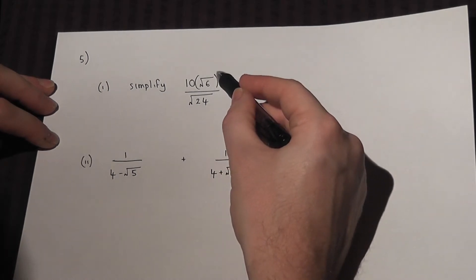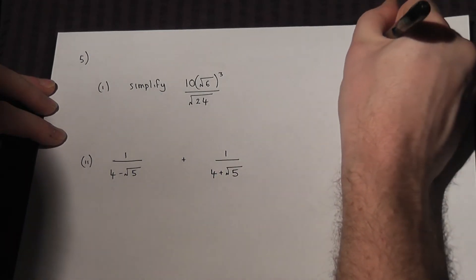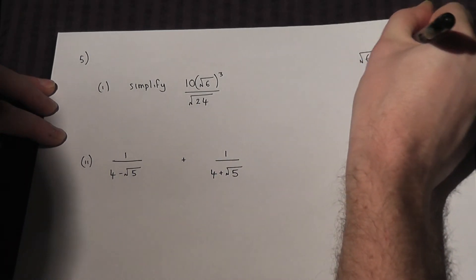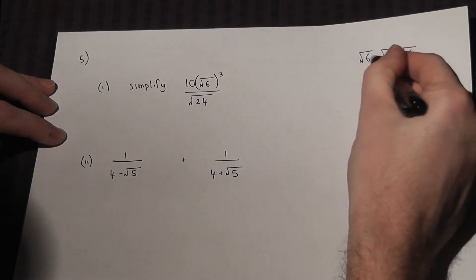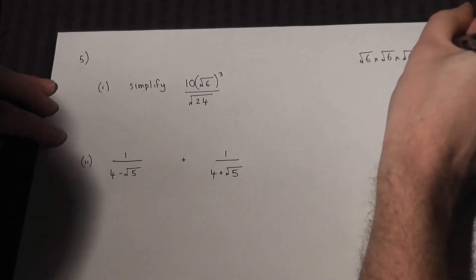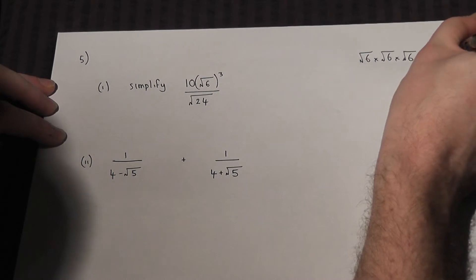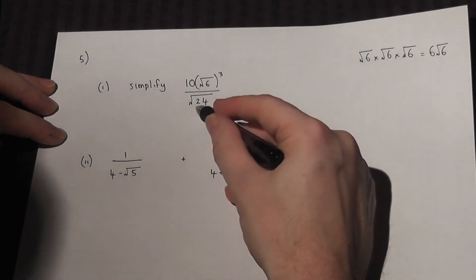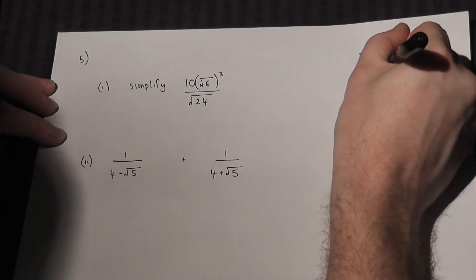Root 6 cubed just means root 6 times root 6 times root 6. Now root 6 times root 6 times root 6, the first two will just equal 6, so that just equals 6 root 6. Now root 24 can also be made simpler.